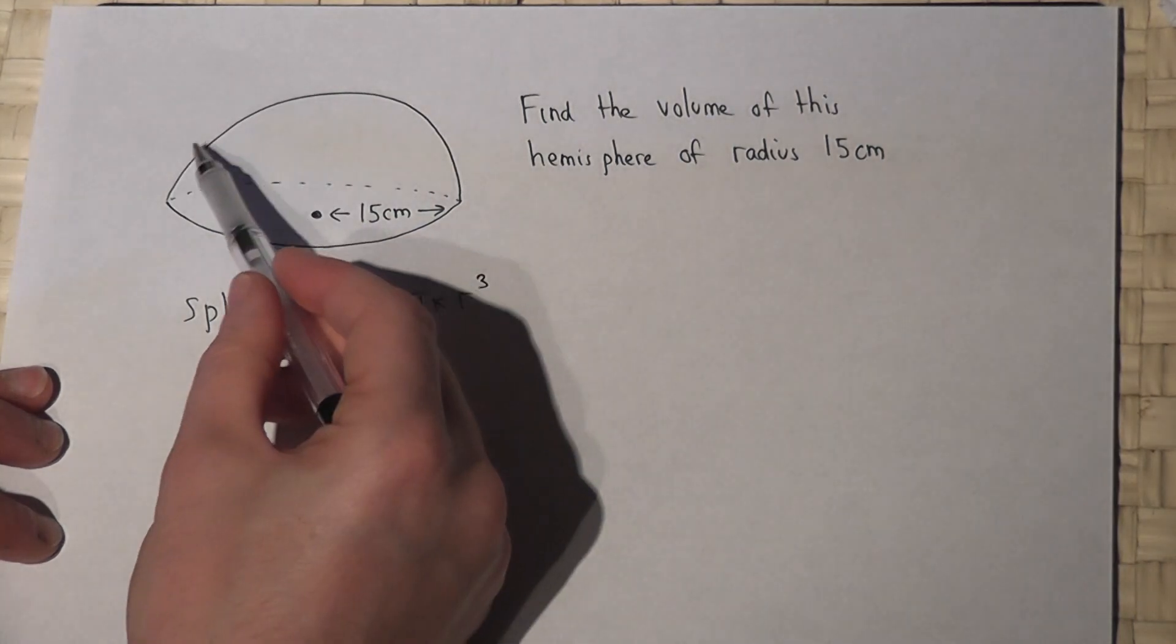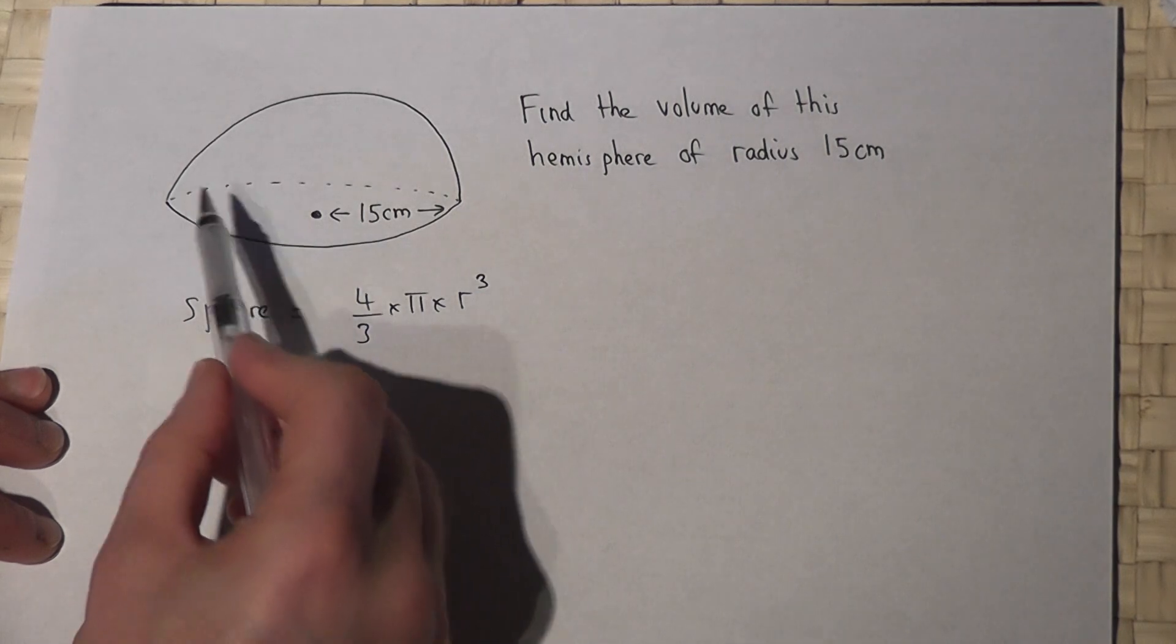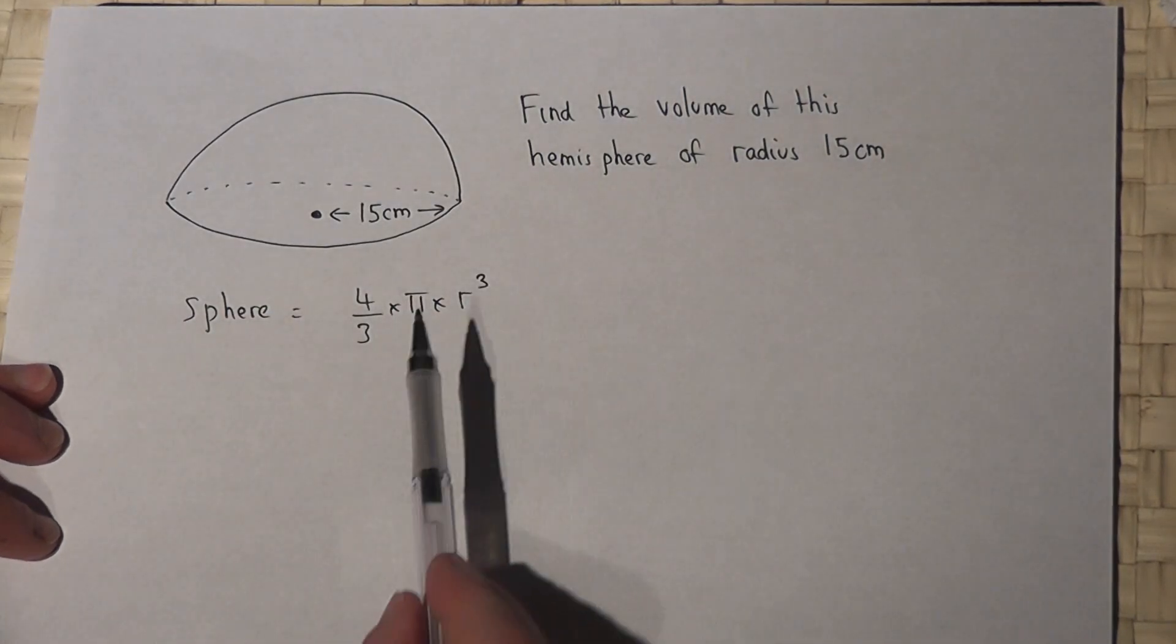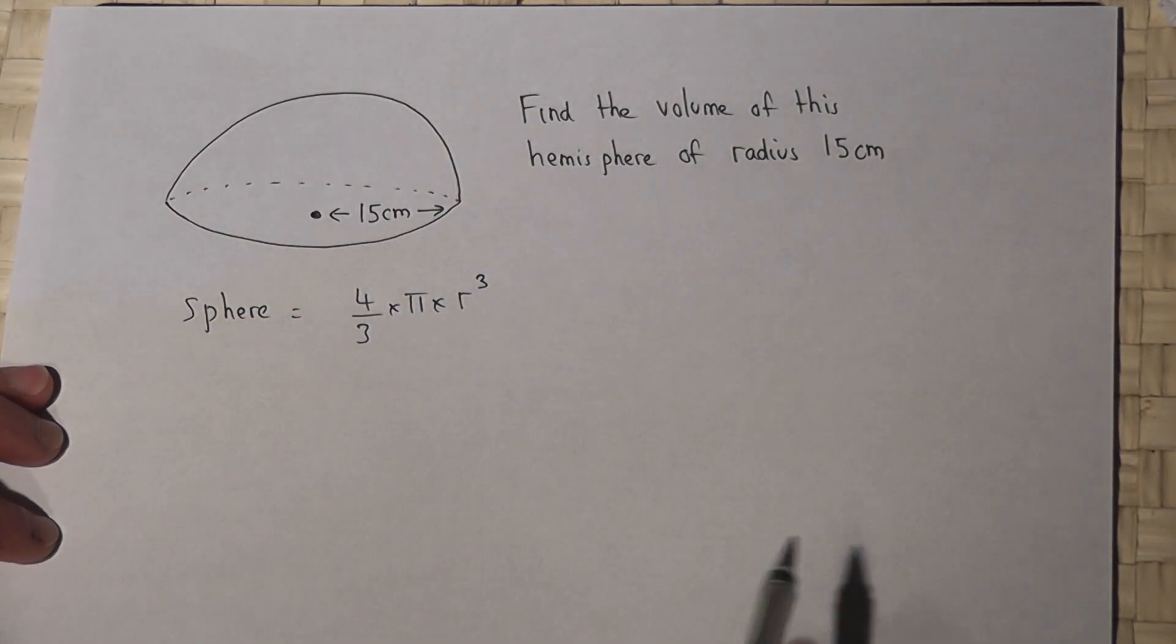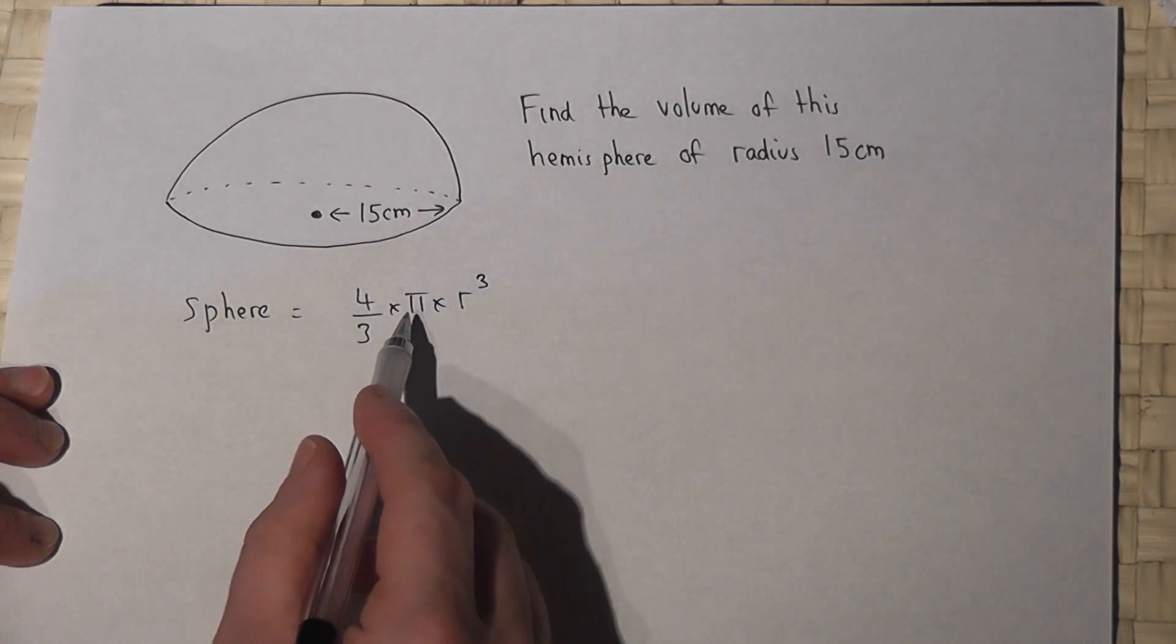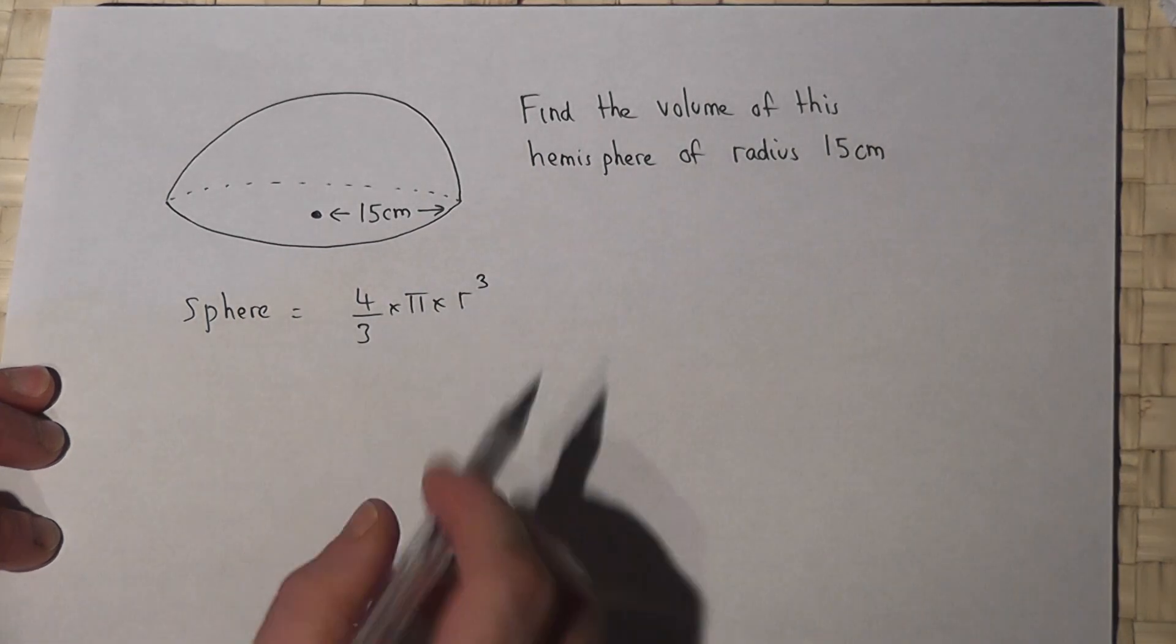Now a sphere is the full globe and this is just half a sphere, i.e. a hemisphere. So if we find the volume for a sphere, then to find the hemisphere we just have to halve our answer.